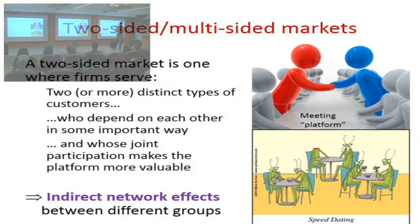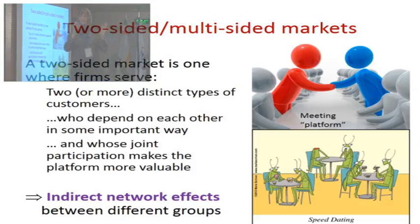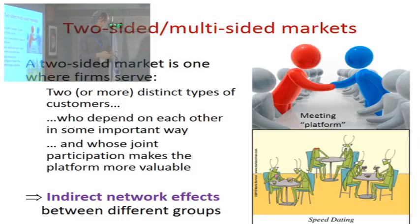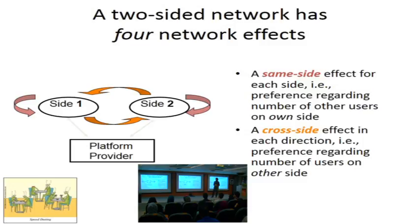Now let's look more specifically at the two-sided and multi-sided market literature from IO economics. How many of you are familiar with two-sided markets? Now we're talking specifically about markets — not just any technical system, but a system where people trade. My example throughout the next few slides is speed dating. In a two-sided market, you have two distinct kinds of customers that come together on the platform and depend on each other.